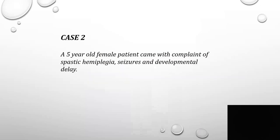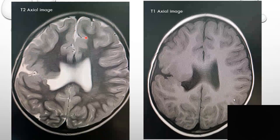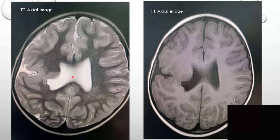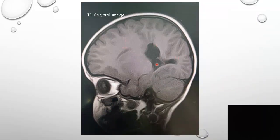Case number 2: A 5-year-old female patient presented with complaints of spastic hemiplegia, seizures, and developmental delay. The T1 and T2 axial MRI images show evidence of a cleft following CSF intensity with a focal pointed nipple-like outpouching extending from the ependyma of the body of the right lateral ventricle up to the pial cortical surface of the right parietal lobe. The lips of the cleft are closely opposed with dysplastic heterotopic gray matter lining the cleft on either side. There is absence of septum pellucidum; however, the corpus callosum appears normal. This is the characteristic appearance of closed lip unilateral schizencephaly.